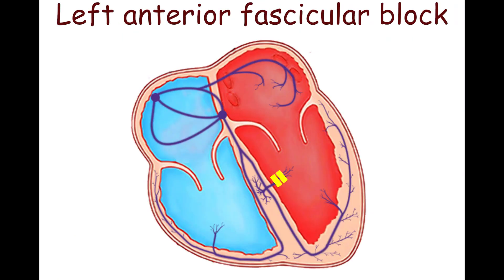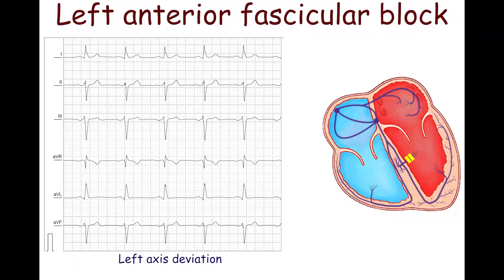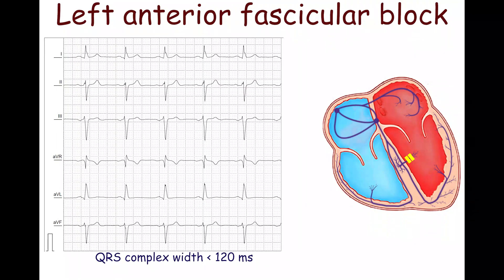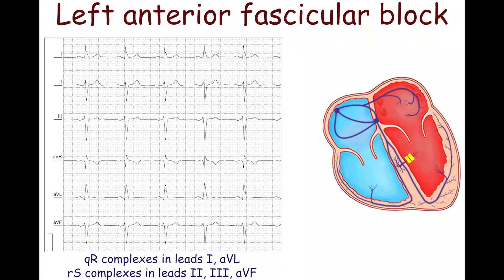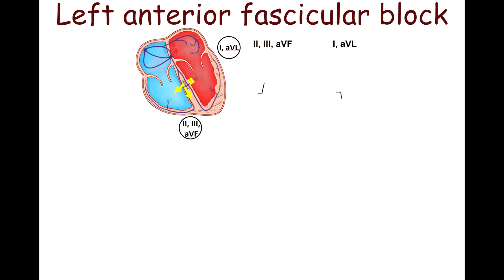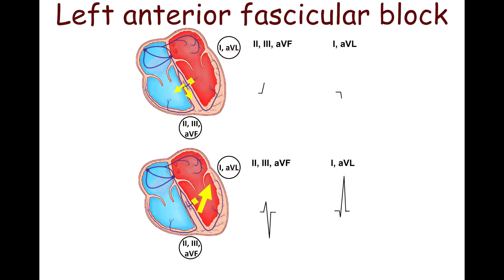The left anterior fascicular block, also referred to as left anterior hemiblock, results in left-axis deviation with a typical range from minus 45 degrees to minus 90 degrees. The QRS complex width does not exceed 120 ms. There is a prolonged R-wave peak time in lead AVL of more than 45 ms. QR complexes in leads I and AVL, and RS complexes in leads II, III, and AVF are seen. As the left anterior fascicle is blocked, the electrical impulse spreads via the septal and posterior fascicles. The vector is directed downward and to the right, producing small Q waves in the lateral leads I and AVL, and small R waves in the inferior leads II, III, and AVF. Then the impulse moves upward and to the left, producing deep S waves in the inferior leads and tall R waves in the lateral leads.